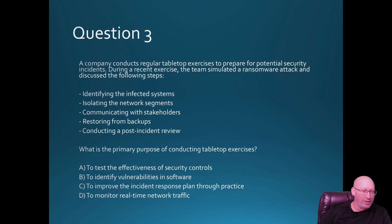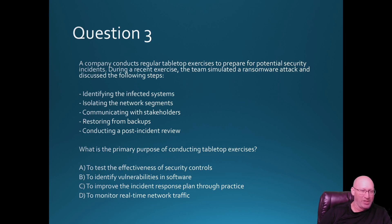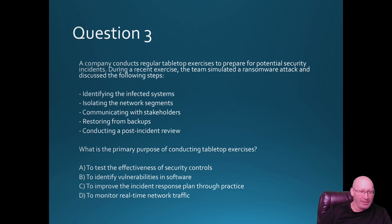Option A — to test the effectiveness of security controls — is wrong. In a tabletop exercise, you're not actually doing anything; you gather around a table and just talk through scenarios. So you can't test real security controls. Option B — identify vulnerabilities in software — requires actually looking at code, which you don't do at a tabletop. Option D — monitor real-time network traffic — also doesn't happen in a tabletop exercise.